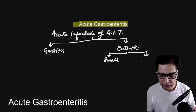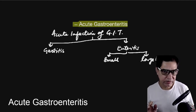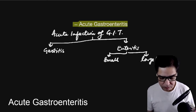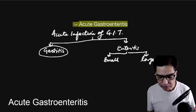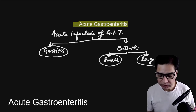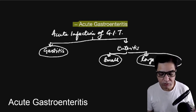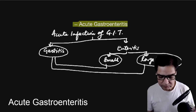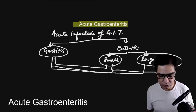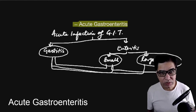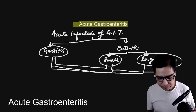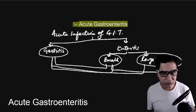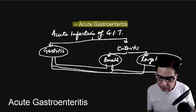In acute gastroenteritis, you can have infection of the stomach only, the small intestine only, the large intestines only, or a combination of these. The most common combination is stomach and small intestine, but it could also involve just the stomach or just the intestines depending on the etiological reason.